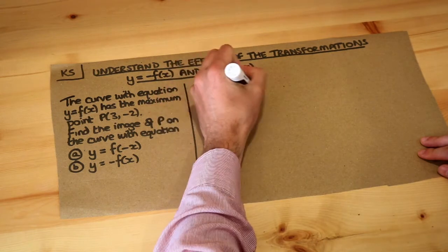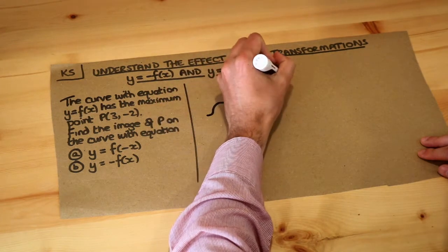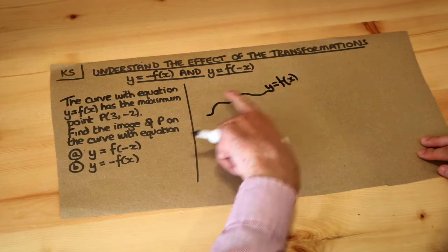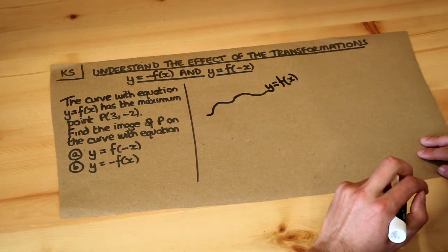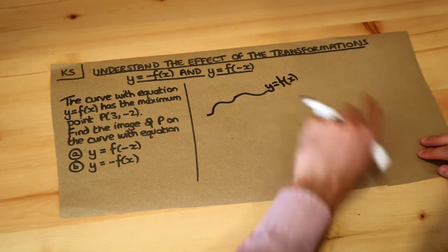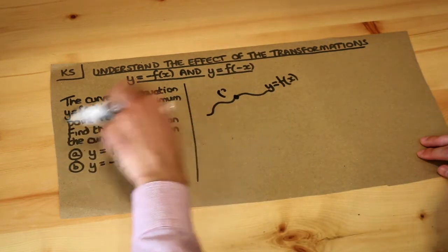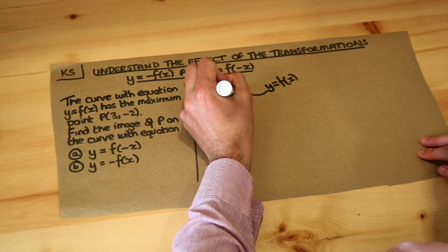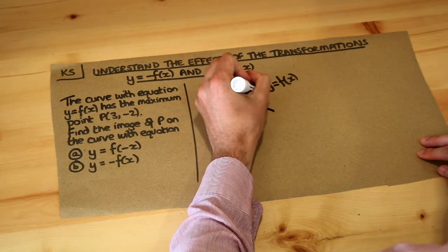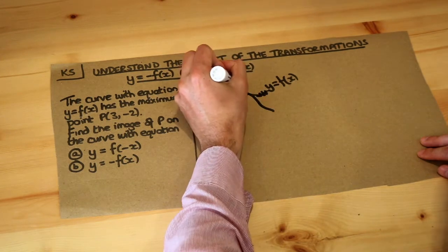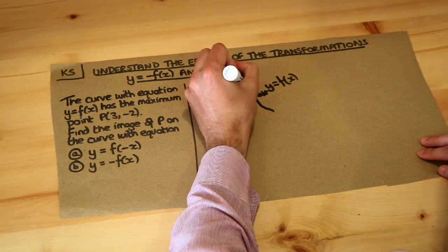So what's going on here is that we've got some curve y equals f of x. We don't know exactly what the curve looks like because we don't know what the function f is, it's some expression in terms of x, but we know there's some point (3, -2) and it says it's the maximum point. It doesn't really matter for the perspective of the question, but let's just say the curve is then going down, then this maximum point here will be (3, -2).